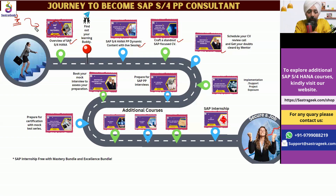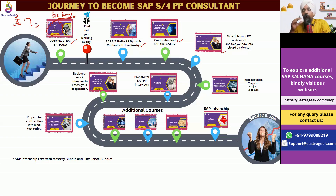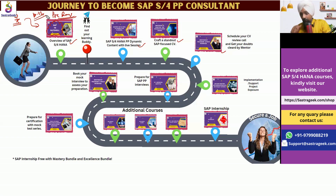As soon as you enroll, this is a prerequisite course — SAP in a Nutshell, an overview of SAP S/4 HANA — which you need to go through. It's a self-paced learning course of around 10 to 12 modules. The actual core PP session would be starting somewhere around September 21st.